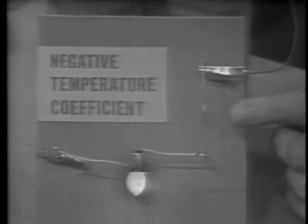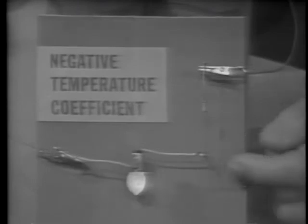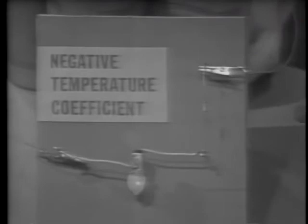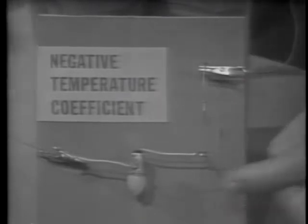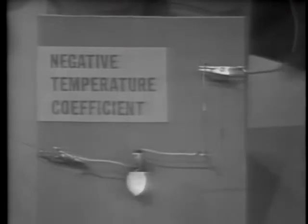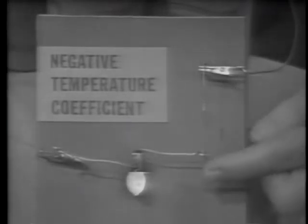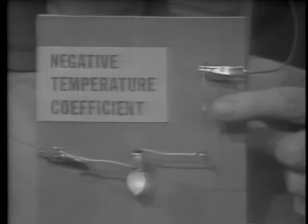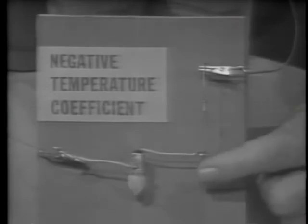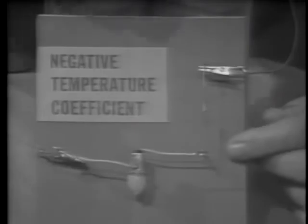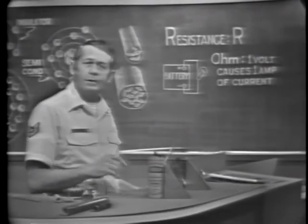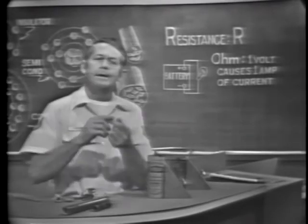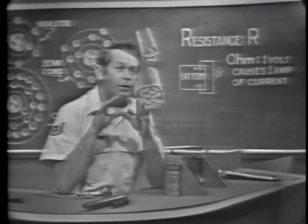The resistance of the germanium must have gone down because the current through the bulb increased. As the germanium starts to cool off, its resistance goes back up, stopping the current through the bulb again. Applying heat again — resistance goes down, current flows through the bulb. As the germanium cools, its resistance increases and stops current through the bulb. Materials that exhibit this property — where resistance decreases with heat — have a negative temperature coefficient. Most materials, however, will exhibit a positive temperature coefficient.